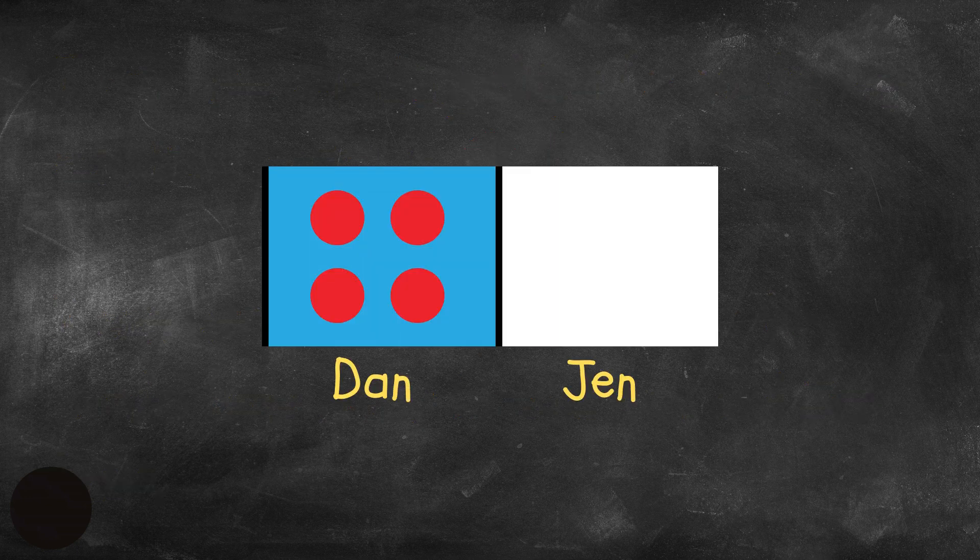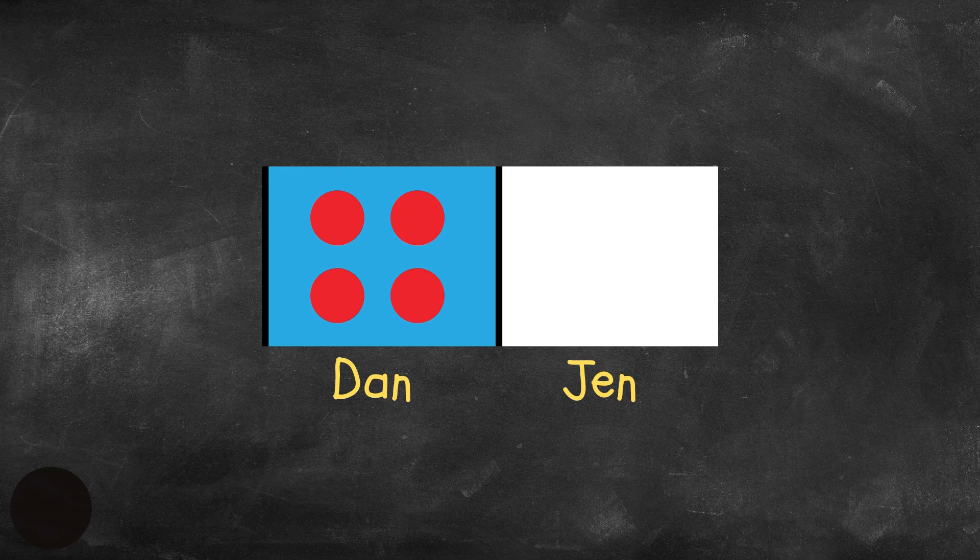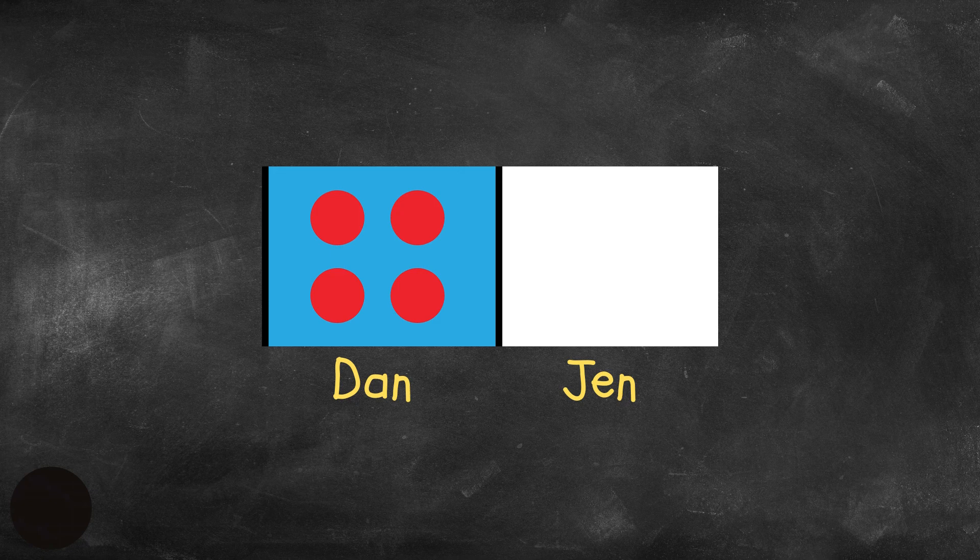So I'll use red chips to show how many blocks Dan has. Remember, he has four blocks. So here are four chips that I'm going to put here. How about for Jen? Well, Jen has zero blocks. None. She doesn't have any. So I am not going to use any chips to show what Jen has because she doesn't have anything.